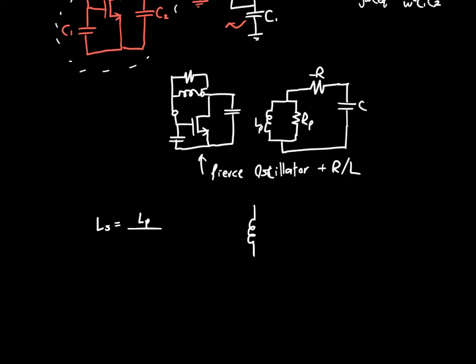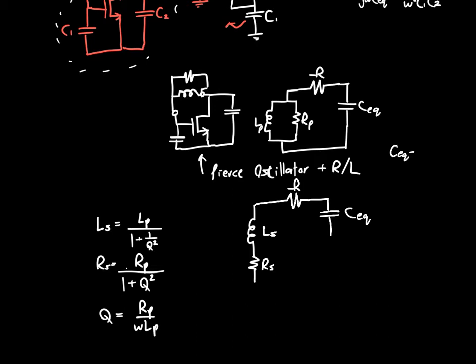So, we can do a series to parallel transformation on this LP RP circuit. And, if you haven't watched the video on that, I believe there's one. If not, I'll make one. But basically, you get that LS is equal to LP divided by 1 plus 1 over Q squared. And, RS is equal to RP divided by 1 plus Q squared. And then Q is the quality factor. It's frequency dependent, but it's equal to RP divided by omega LP.